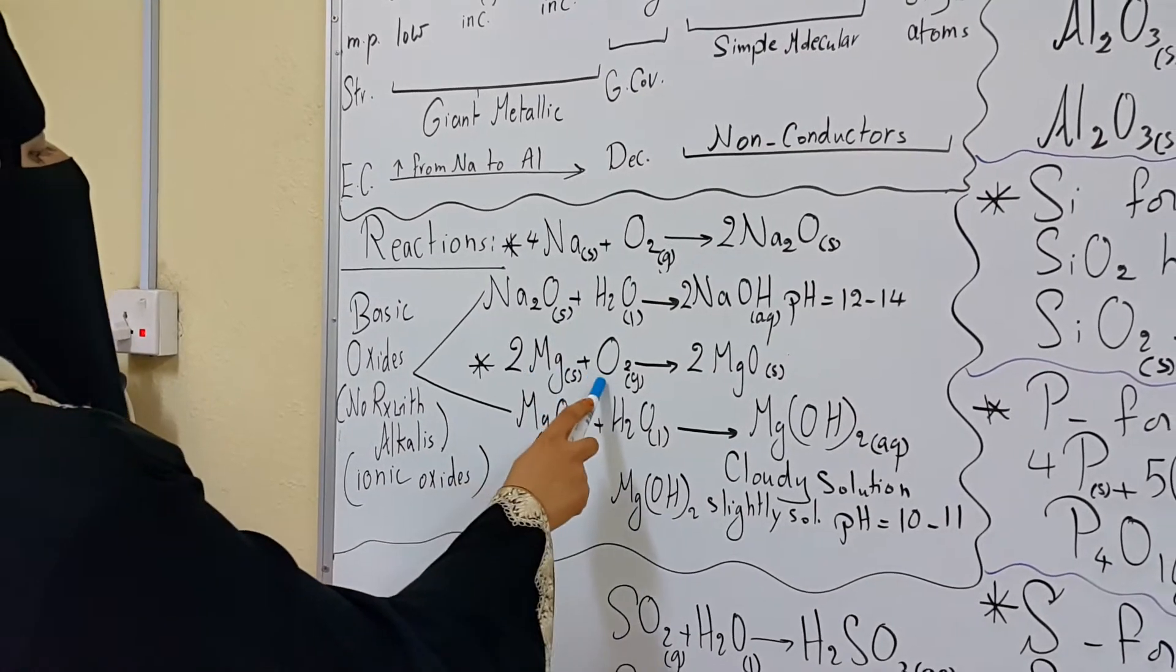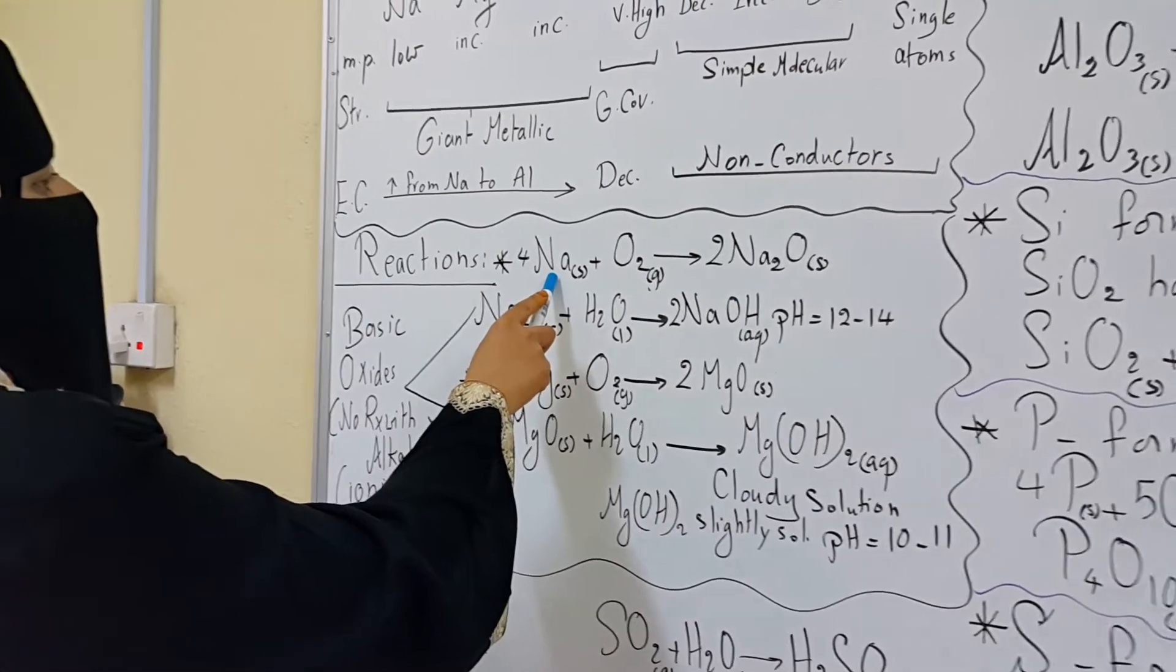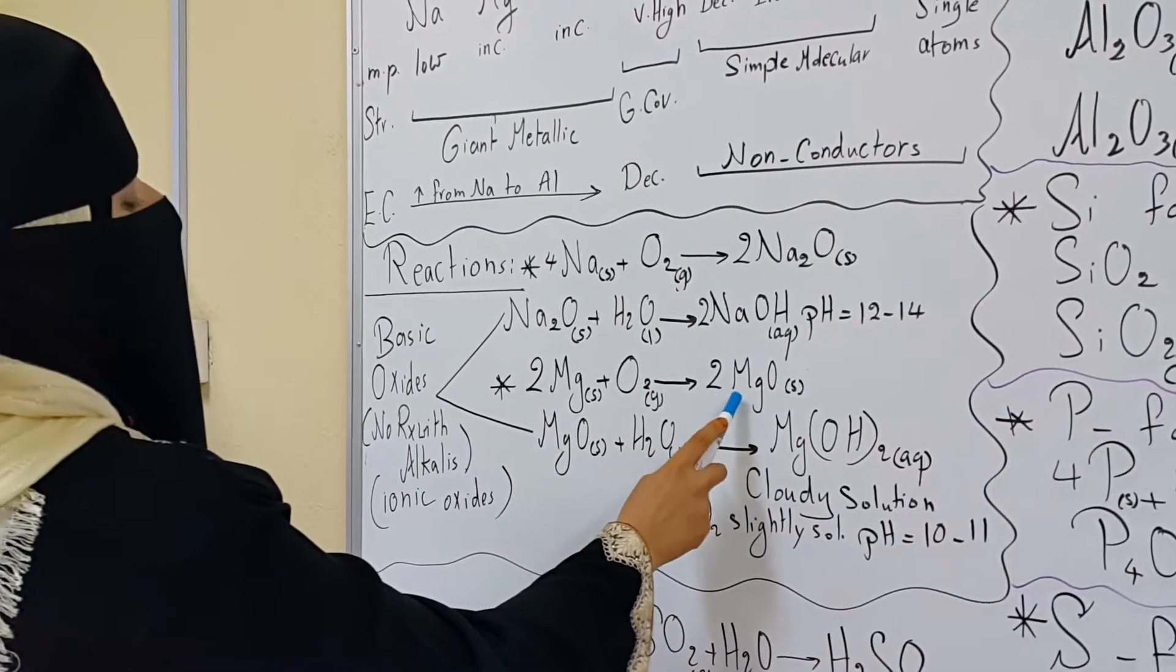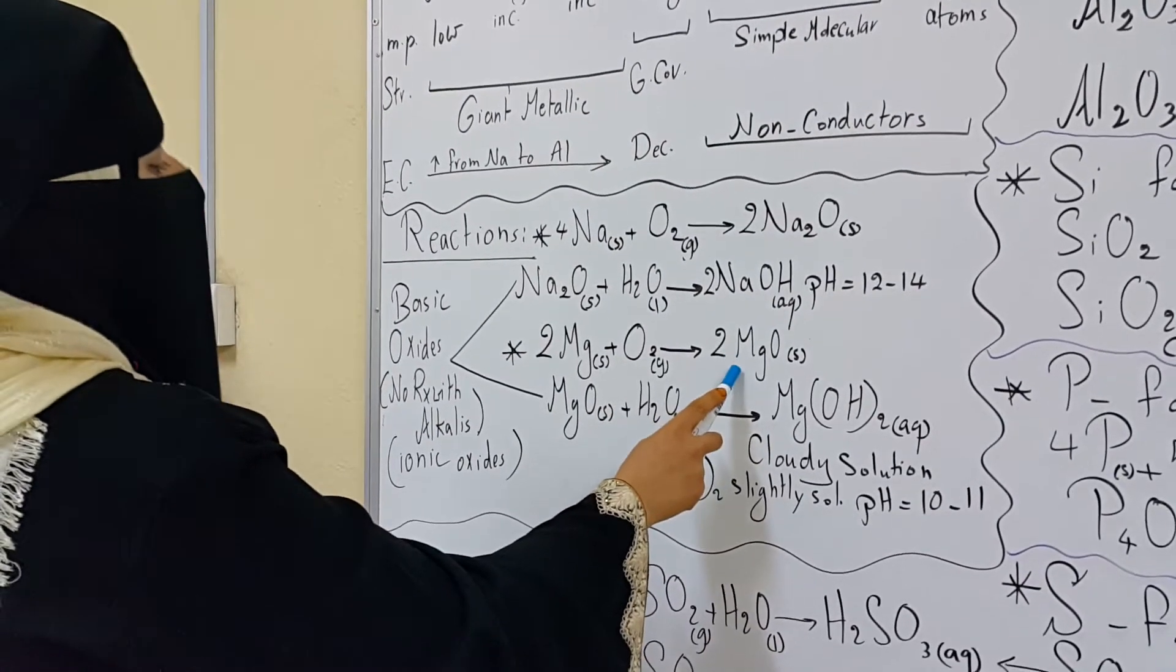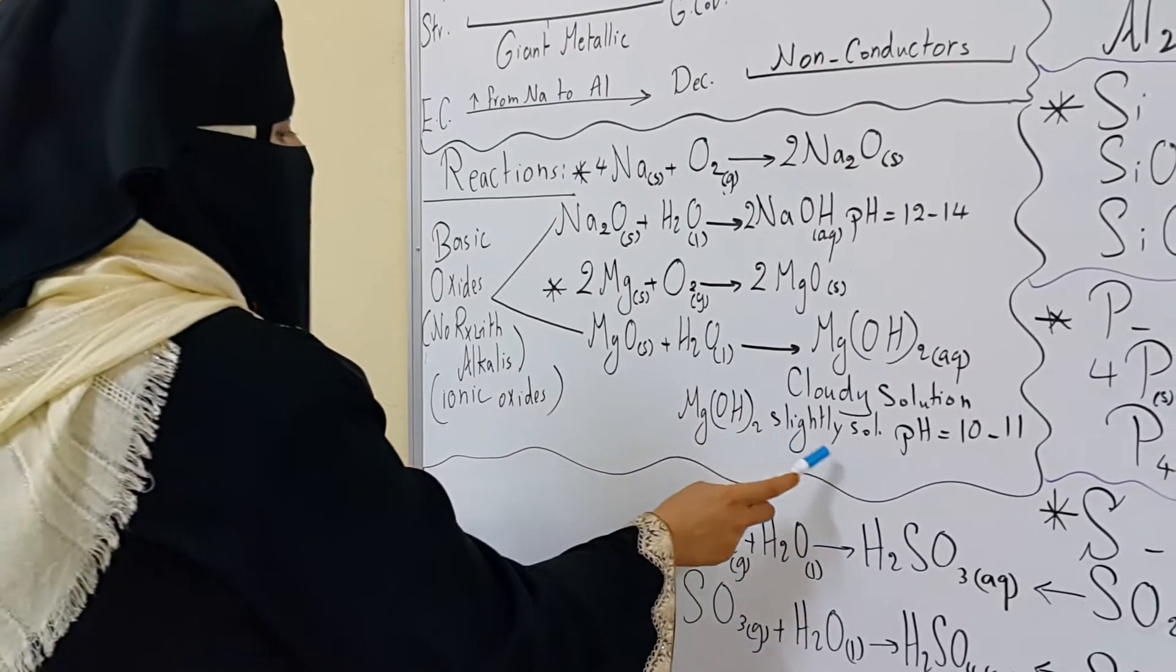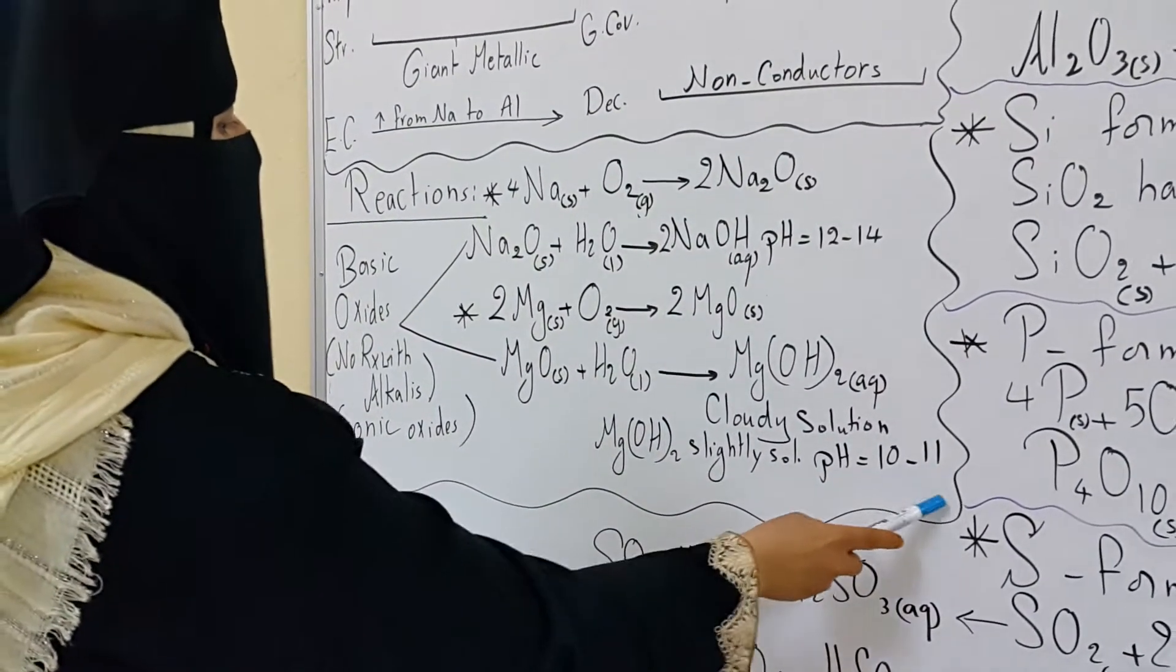Now magnesium reacts with oxygen with a bright white flame. Don't forget that sodium burns in oxygen with a golden yellow flame, magnesium with a bright white flame, forming a layer of magnesium oxide or a white solid of magnesium oxide. The magnesium oxide dissolves slightly in water to form a weakly alkaline solution of pH 10 to 11 only.